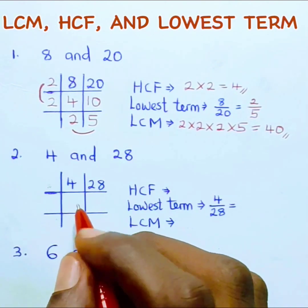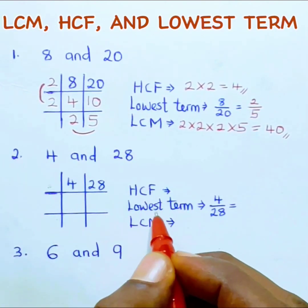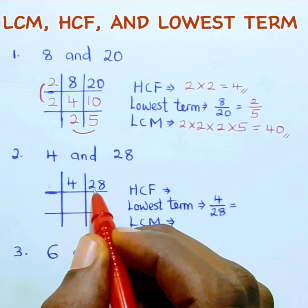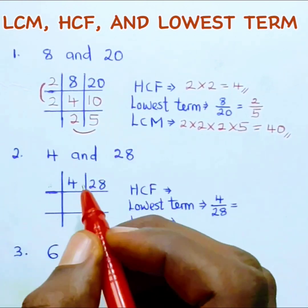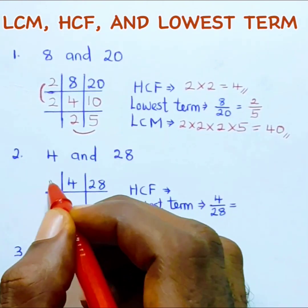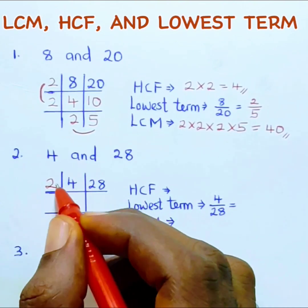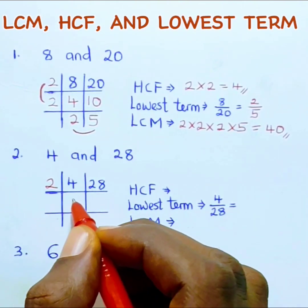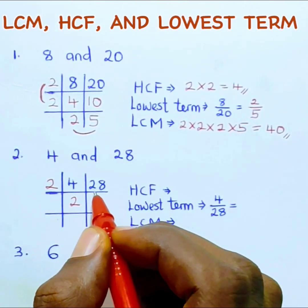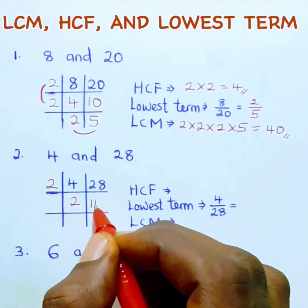Let's try another example: find the HCF, lowest term, and LCM of 4 and 28. The smallest number that can divide both is 2. 4 divided by 2 is 2, and 28 divided by 2 is 14.